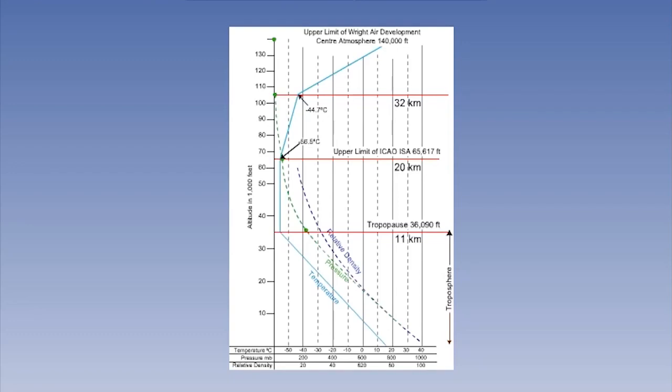However, the model only extends to 32 kilometers, which is about 105,000 feet above mean sea level. ISA assumes that at mean sea level the temperature is 15 degrees Celsius, pressure is 1013.2 hectopascals, and the density is 1225 grams per cubic meter.